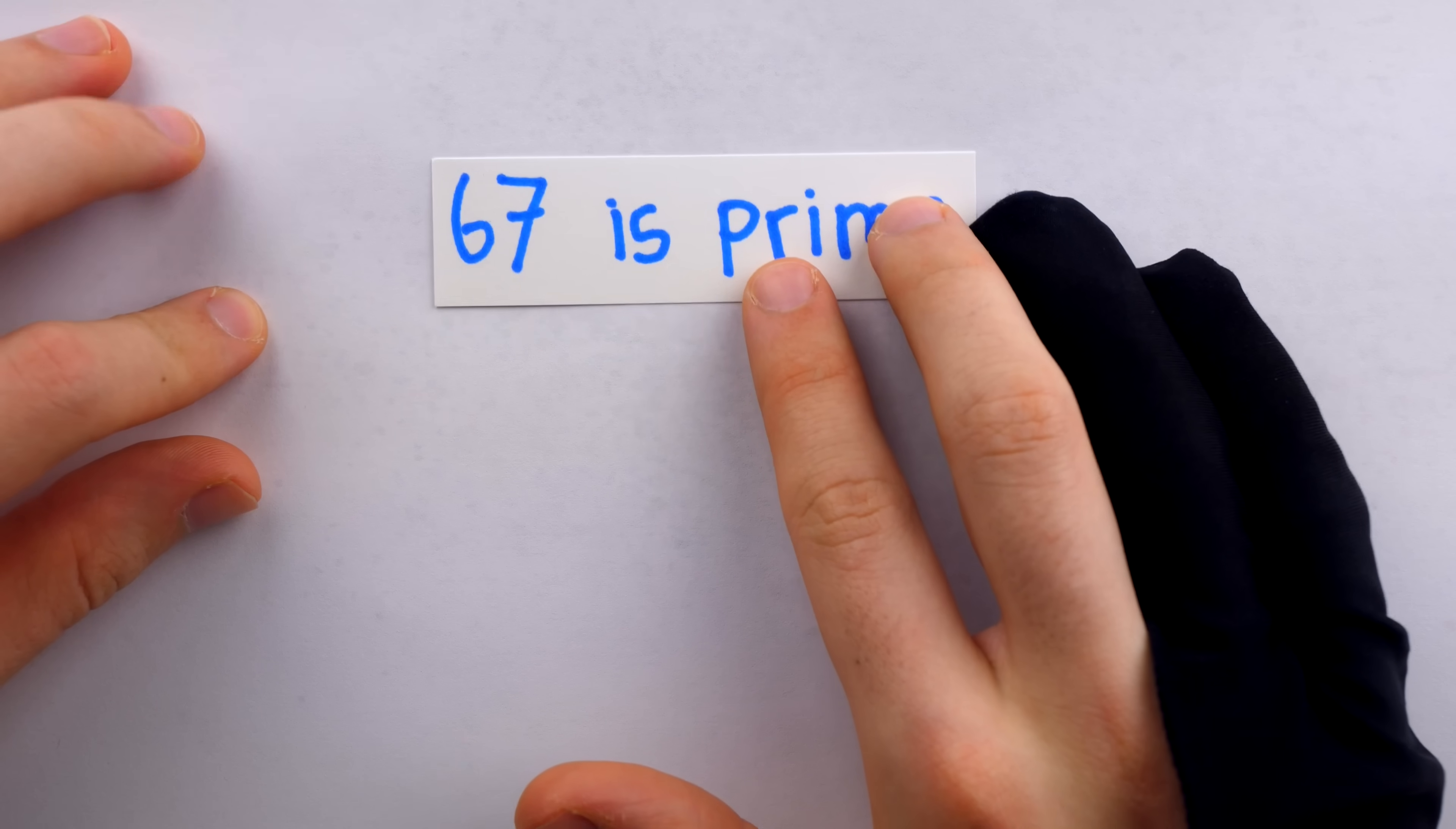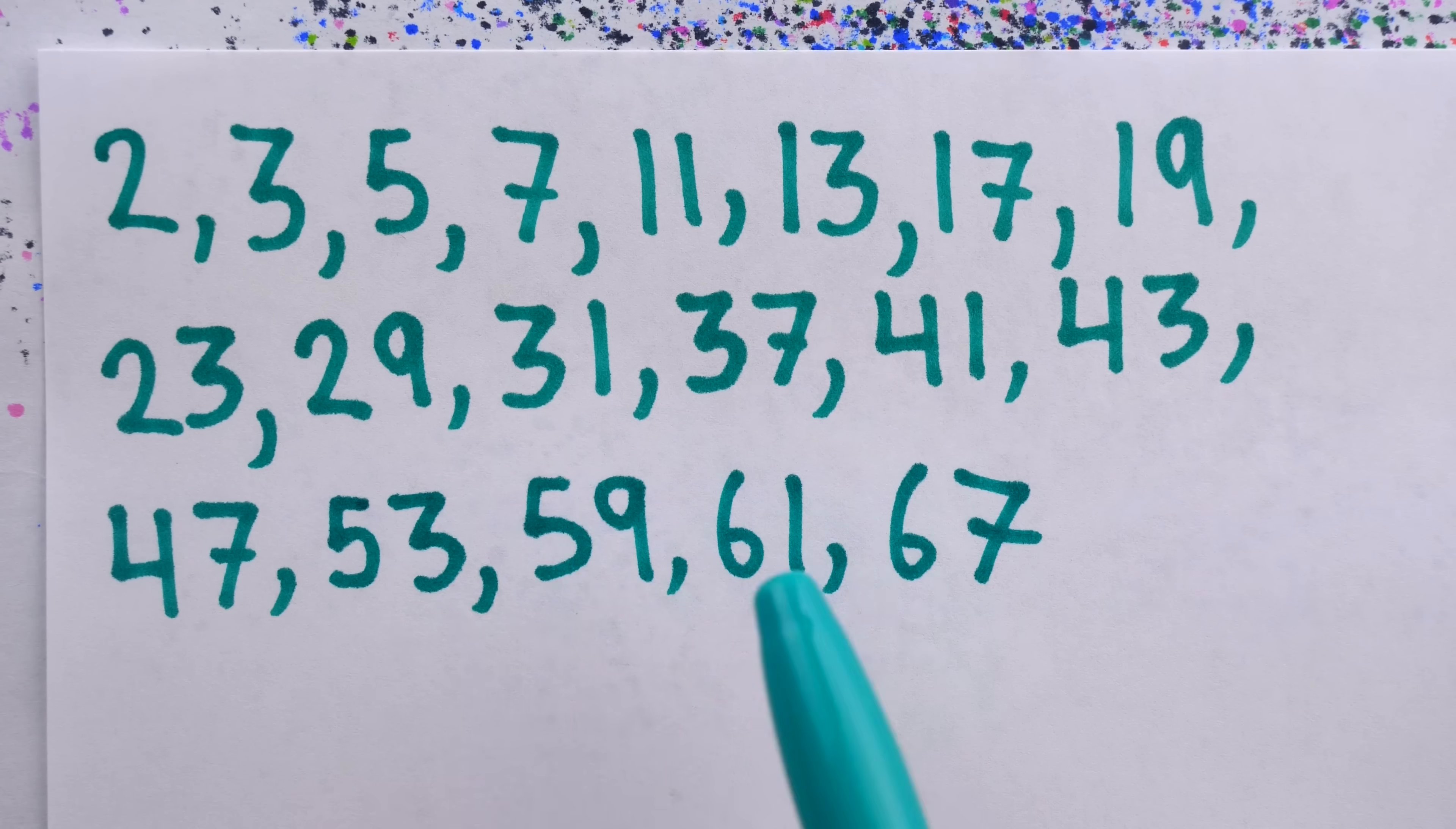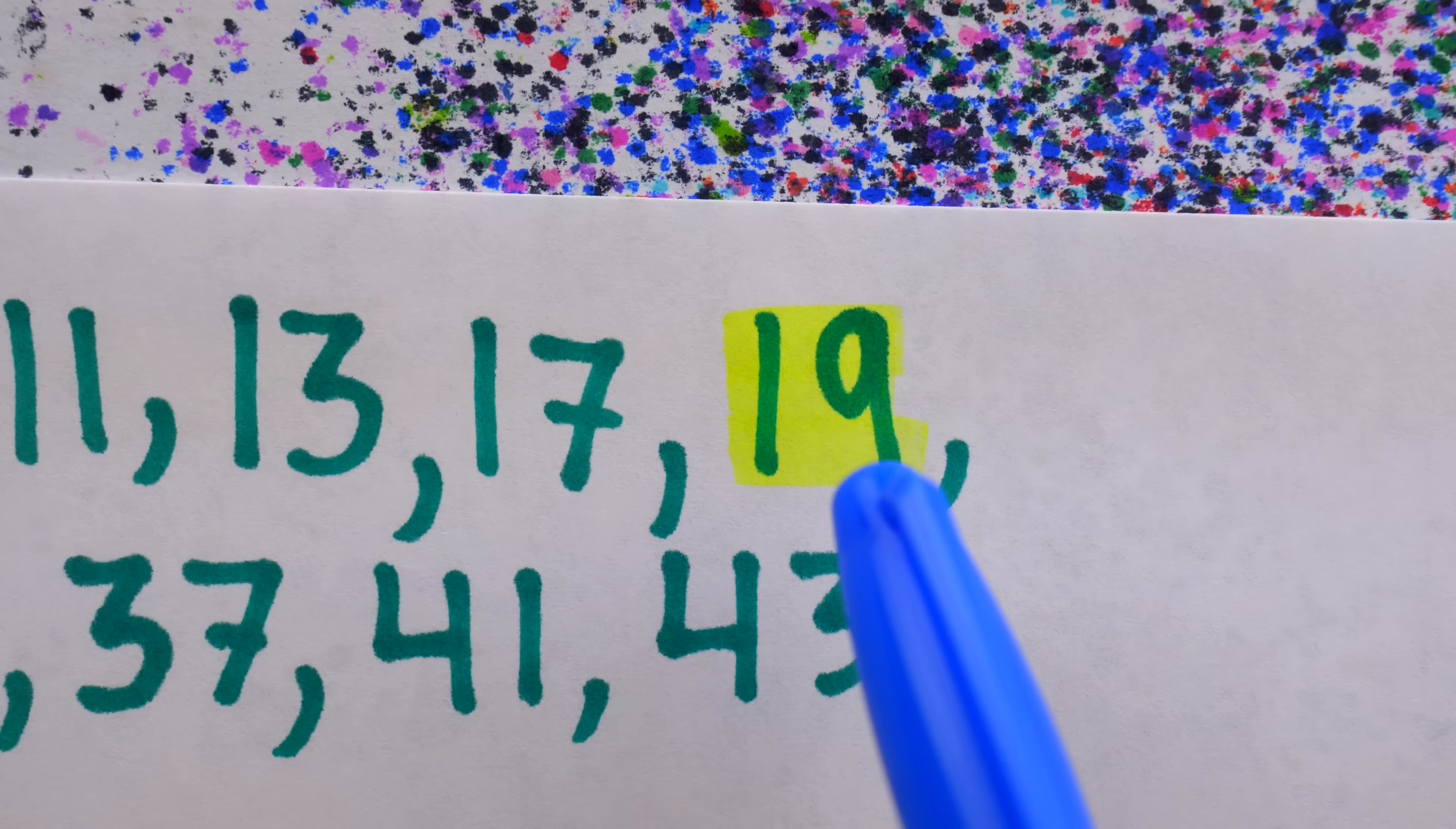The first and most obvious fact putting 67 among math's eternal all-stars is that 67 is prime. This means the only factors of 67 are 1 and 67 itself. In fact, if you write out a list of primes, you'll find that 67 is the 19th prime number on the list, and 19 itself is a prime number. This means that 67 isn't just prime, but super prime, because its position in the list of primes, namely 19, is itself a prime number.